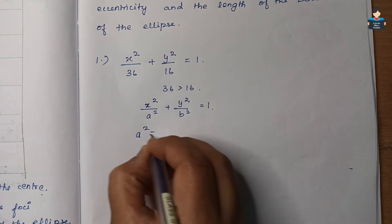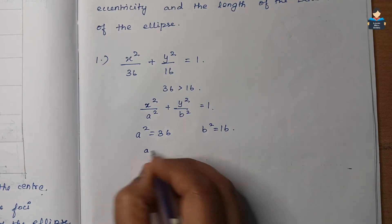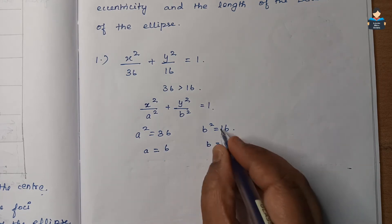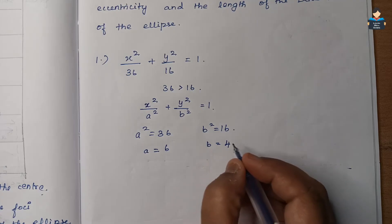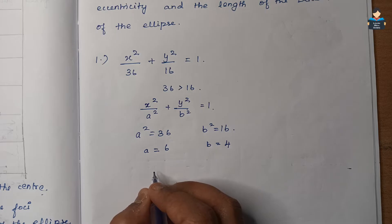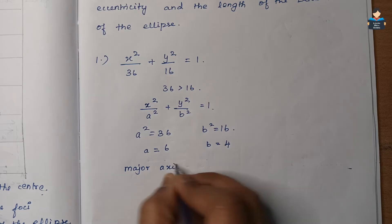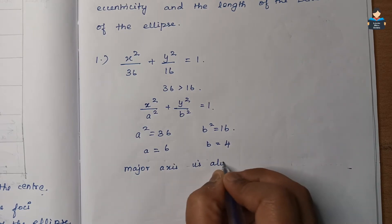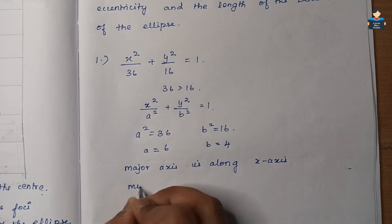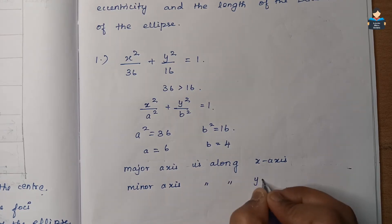So a = √36 = 6 and b = √16 = 4. The major axis is along the x-axis and the minor axis is along the y-axis.